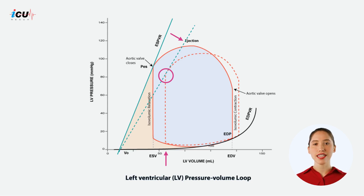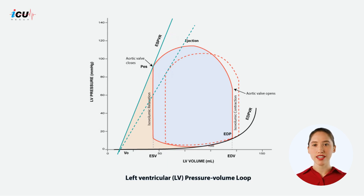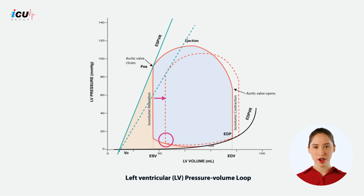The heart is less effective at pumping against a given afterload, leading to lower pressures. Decreased contractility means the heart cannot eject as much blood during systole, which increases the end systolic volume.